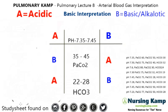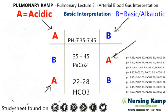Let's set it up. ABBAB — A stands for acidic, so whenever you see an A, that is acidic. Whenever you see a B, that is basic or alkalotic.